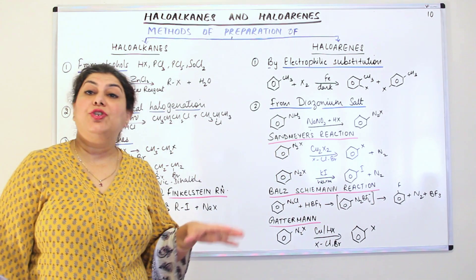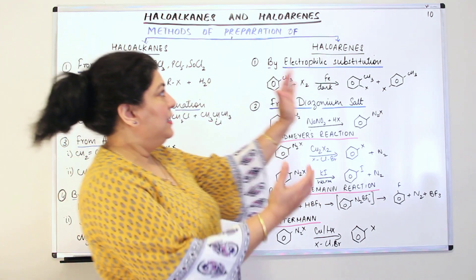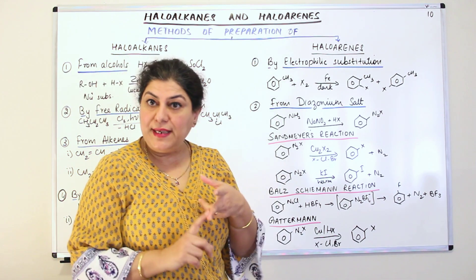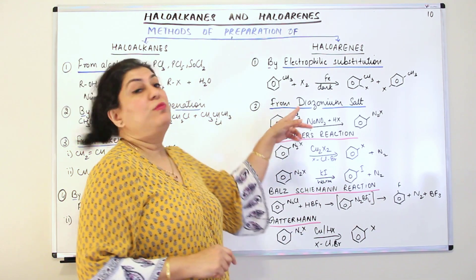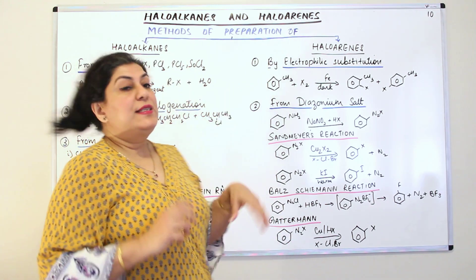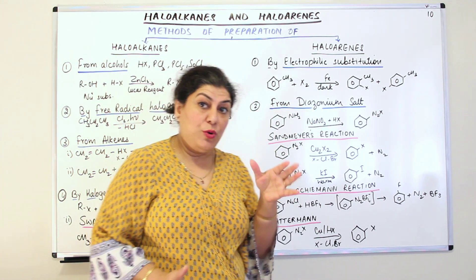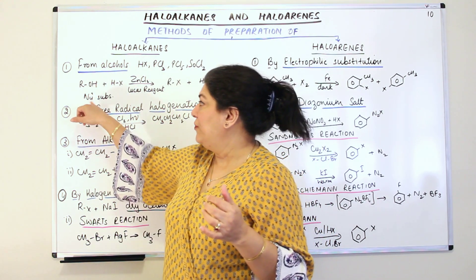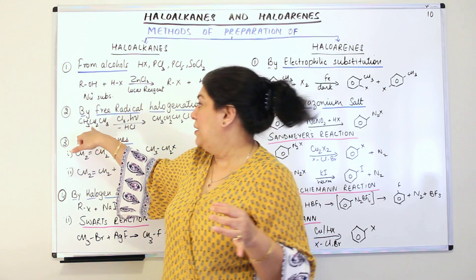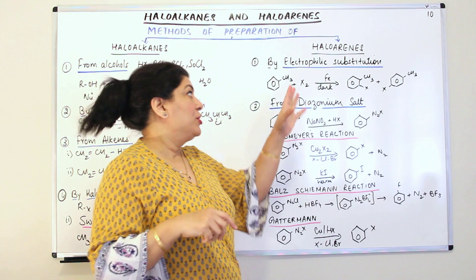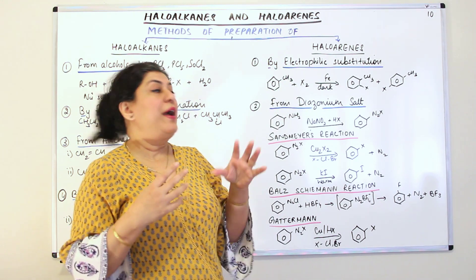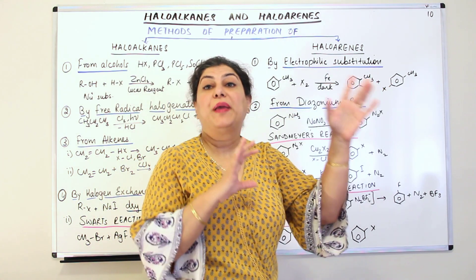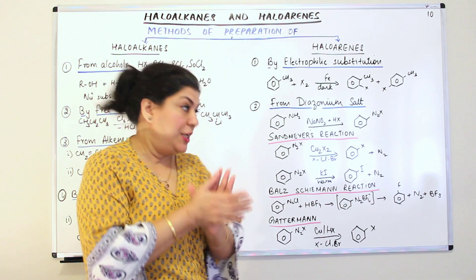Those were the methods of preparation of haloalkanes. For haloarenes, there are two different methods of preparation. The first is by electrophilic substitution, and the second is from diazonium salts. For the formation of aromatic halogen derivatives, you use the electrophilic substitution mechanism.